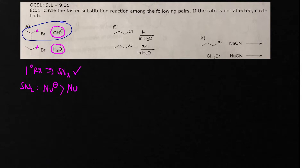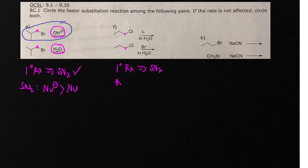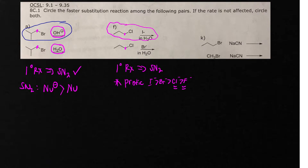In problem F, we have a primary alkyl halide once again, so we know that a primary alkyl halide proceeds by SN2. Here I have two potential nucleophiles: iodide and bromide. To determine nucleophilicity, you want to look at the solvent. In polar protic solvents, iodide is better than bromide, which is better than chloride, which is better than fluoride. This is because water will more strongly hydrogen bond and solvate the smaller ions. So this is going to be a faster reaction.